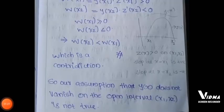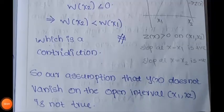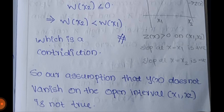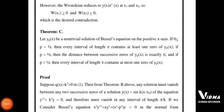So our assumption was wrong. Our assumption that y(x) does not vanish on the open interval (x_1, x_2) is not true. Hence y(x) must vanish in the interval (x_1, x_2). Next, Theorem C.